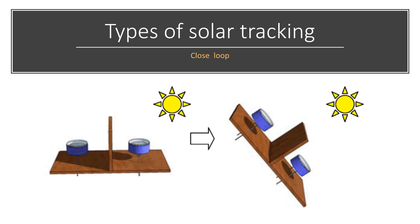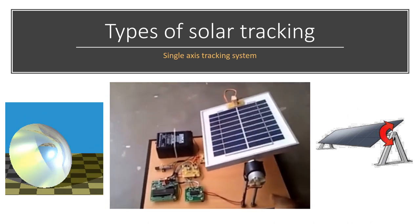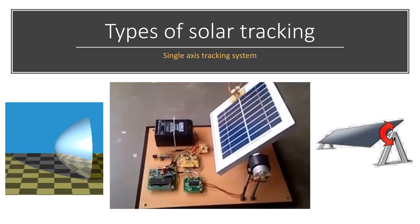The next type of tracking is closed loop tracking. In closed loop tracking, instead of solving for astronomical equations, a LDR sensor pair is used. The panel rotates around single axis. In this type of tracker, panel moves only from east to west.